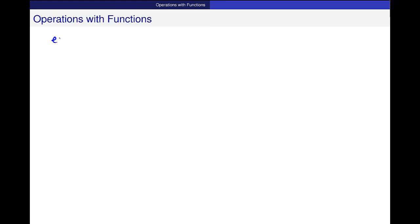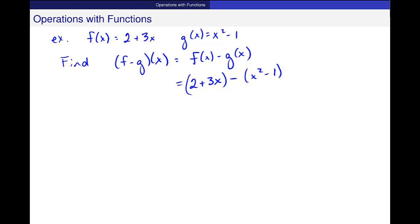Let's get a couple of functions: f of x is equal to 2 plus 3x, and g of x is equal to x squared minus 1. And I just want to find f minus g of x. And we just saw that this was f of x minus g of x, which is 2 plus 3x minus x squared minus 1.